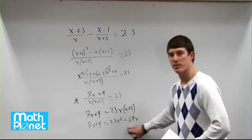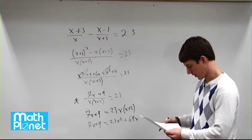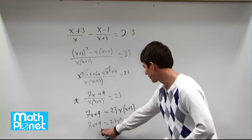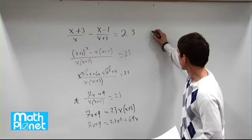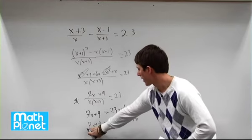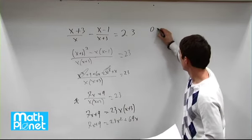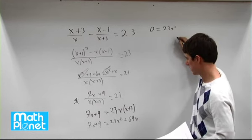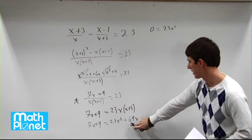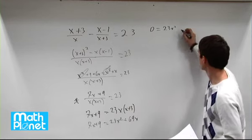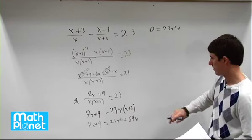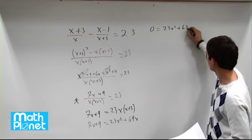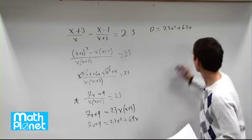So then we want to move everything to the same side and solve for x directly. So let's do that now. And let's move it up here. So we're going to have minus 7x and minus 9, so we're going to have 0 equals 23x squared. And then we have plus 69x minus 7x. So plus 69 minus 7 is 62x and then minus 9.